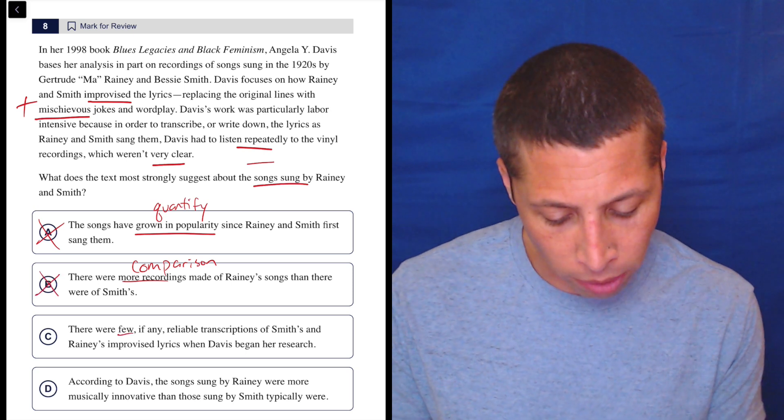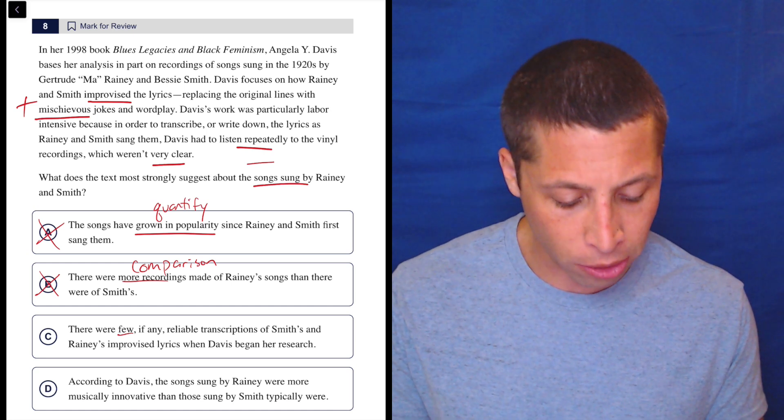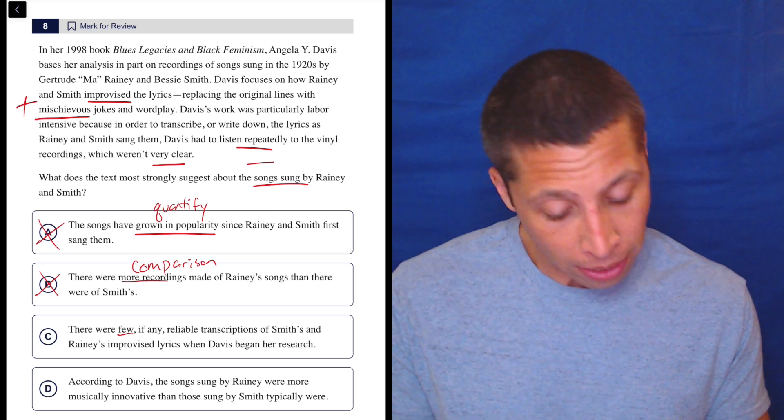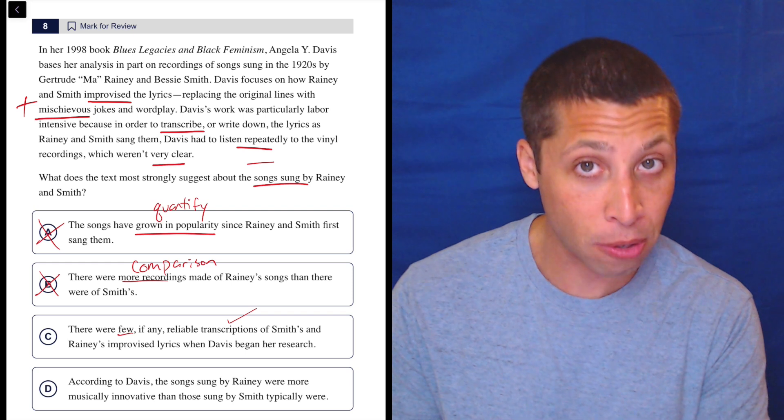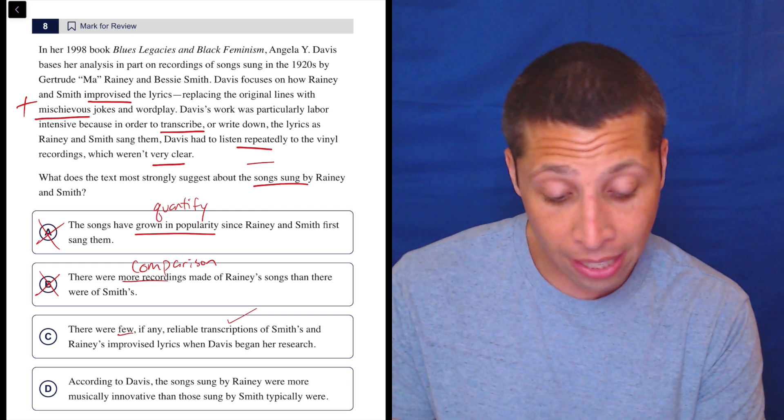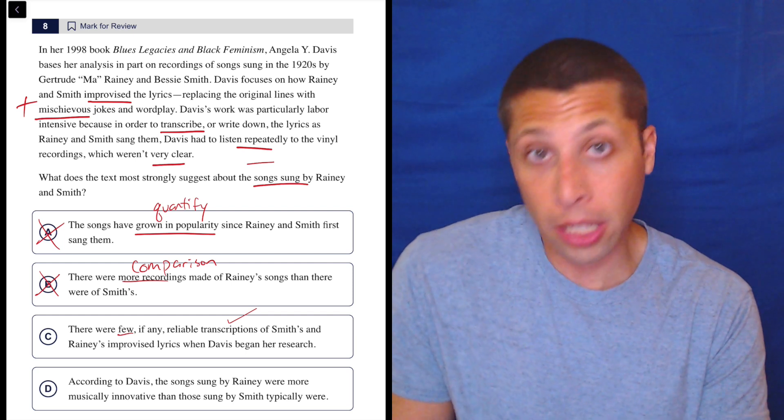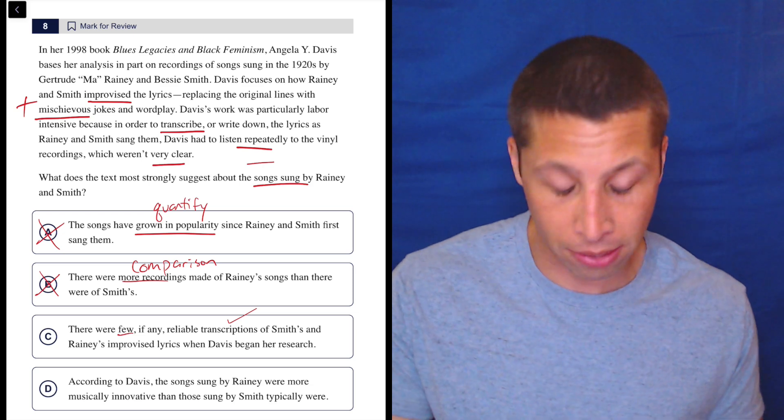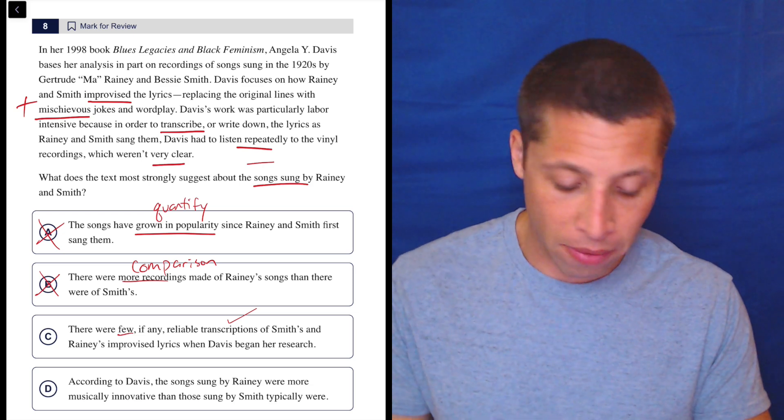C: There were few, quantifier, if any, reliable transcriptions of Smith's and Rainey's improvised lyrics when Davis began her research. Well, okay, I was a little skeptical with the word few, but the transcription piece, they're talking about that, right? She's writing them down, right? Transcribe is the word there. So there were few of them because I guess Davis had to do the work of writing them down herself. So that seems like it could make sense that the songs had few transcriptions and that's why Davis had to work so hard to do it. Feels a little bit like I'm telling a story there, but I've got some evidence of it.